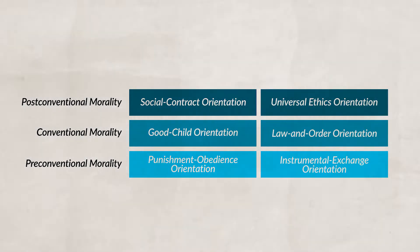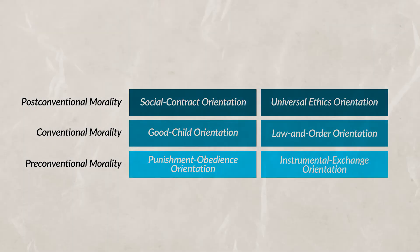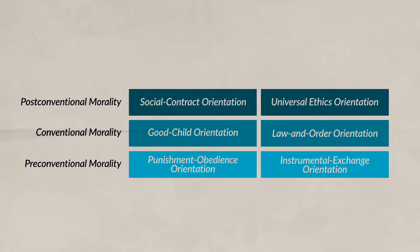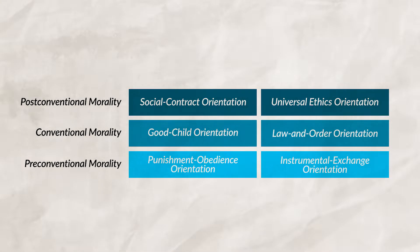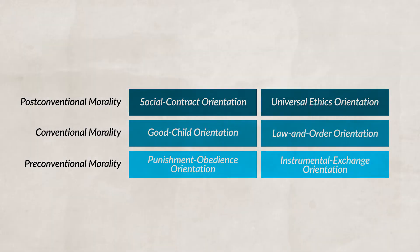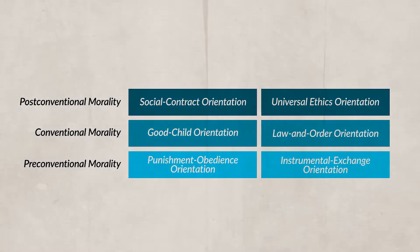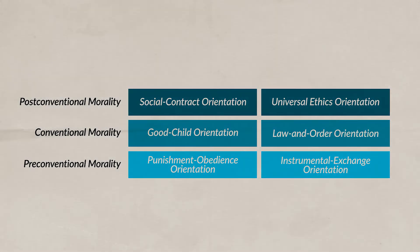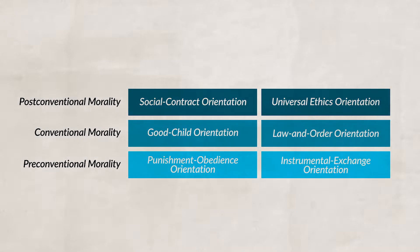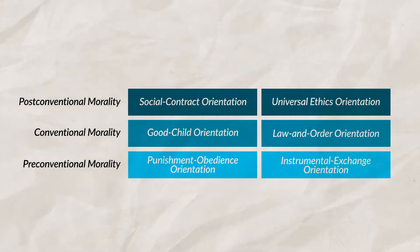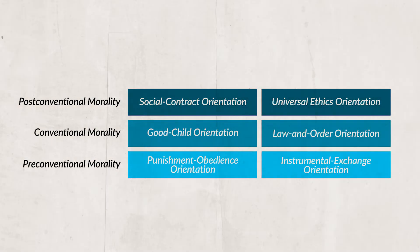The last stage is universal ethics orientation. Morality is now more complex. The individual realizes that moral reasoning is complicated and that not all laws may be good. Here, an individual has their own thoughts and opinions on different matters and behaviors. Morality is driven by internal principles. Individuals will look at the entire impact of a decision to see if it's moral, and not just take it at face value.